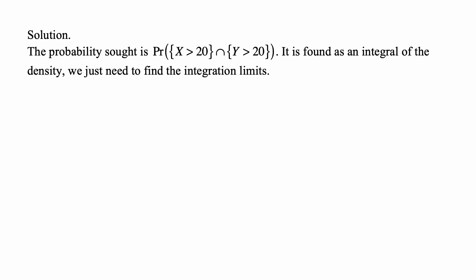The probability we're looking for is the probability that x is more than 20 and y is more than 20. We are given the density, so we can find this probability just by calculating an integral of the density over an appropriate region, the two-dimensional region where x is more than 20 and y is more than 20.